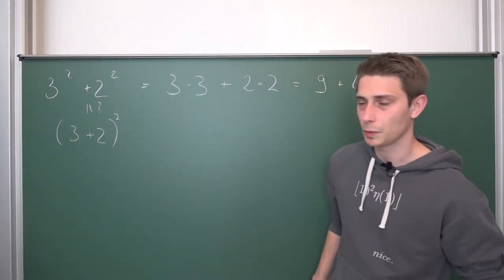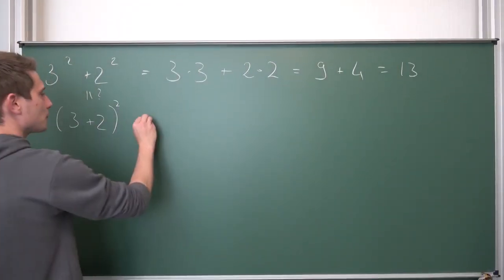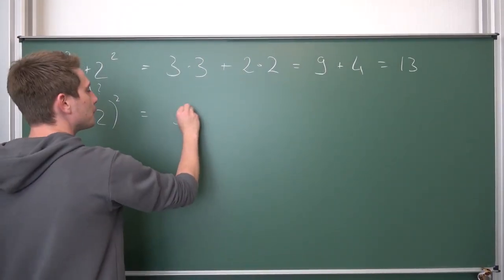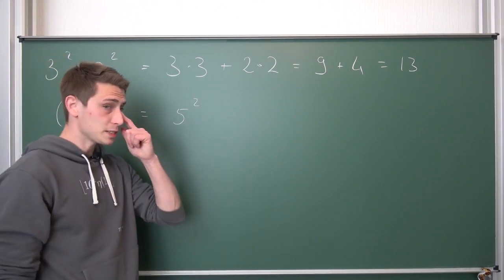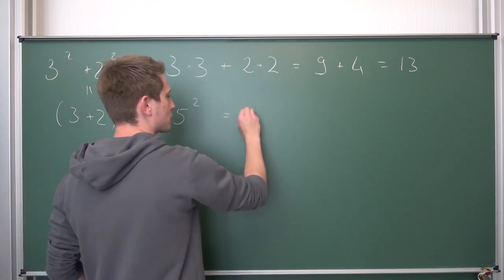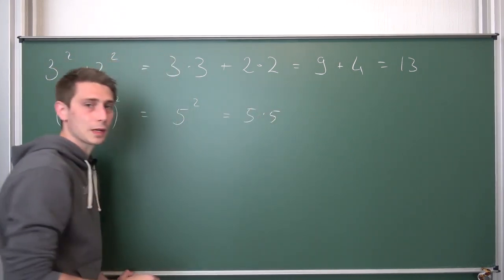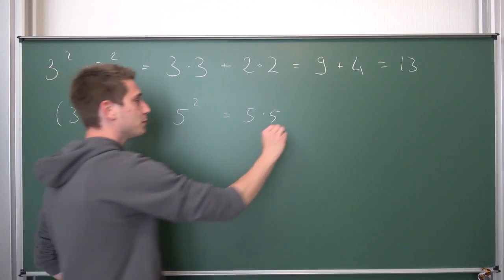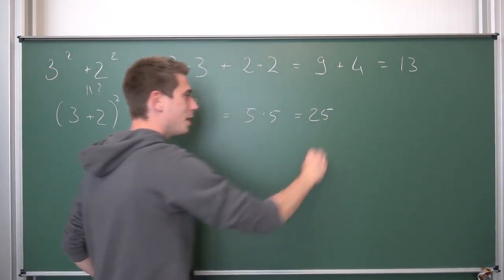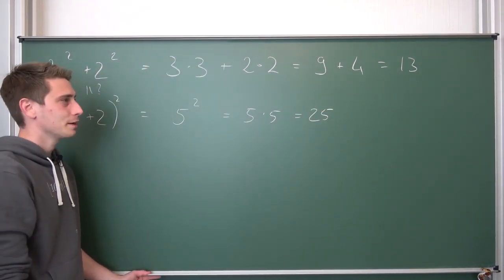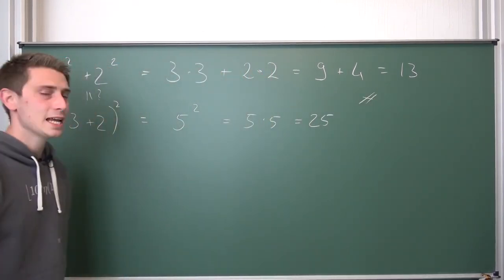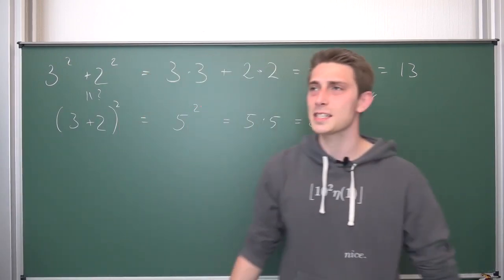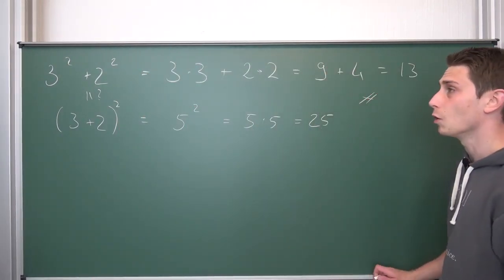But here comes the problem. Let us rewrite 3 plus 2. Well, this is nothing but 5 and this is going to be 5 squared. Now 5 squared is by definition just 5 times 5. It's 5 multiplied with itself 2 times. But 5 times 5 is nothing but 25. Wait a minute! That's really wrong! Those two aren't exactly equal. 13 is not equal to 25. And this is a mistake that I see so often.